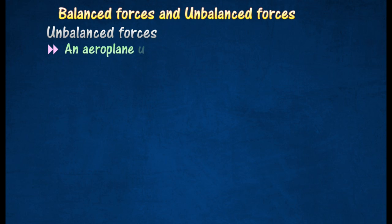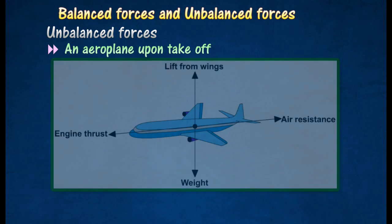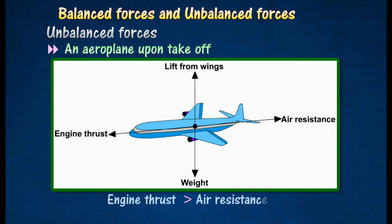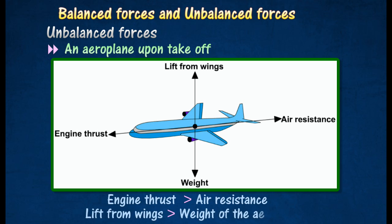For example, consider an airplane that is about to take off. The airplane needs to accelerate to a relatively high velocity. This can only happen when the thrust provided by the engines is much bigger than the air resistance and friction on its tires. On take off, the lift provided by the wings must be much bigger than the weight of the airplane.